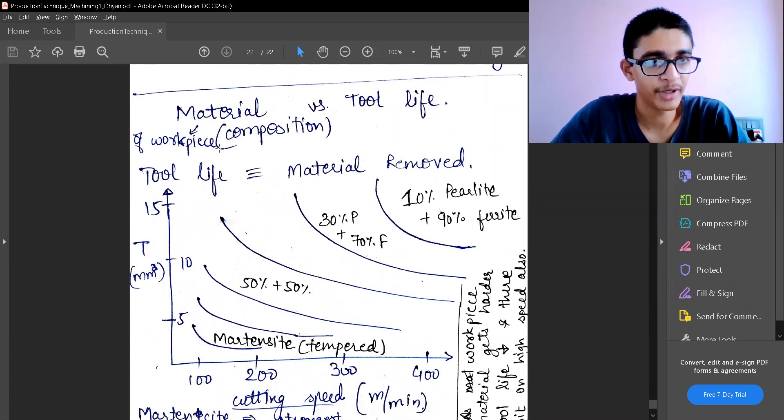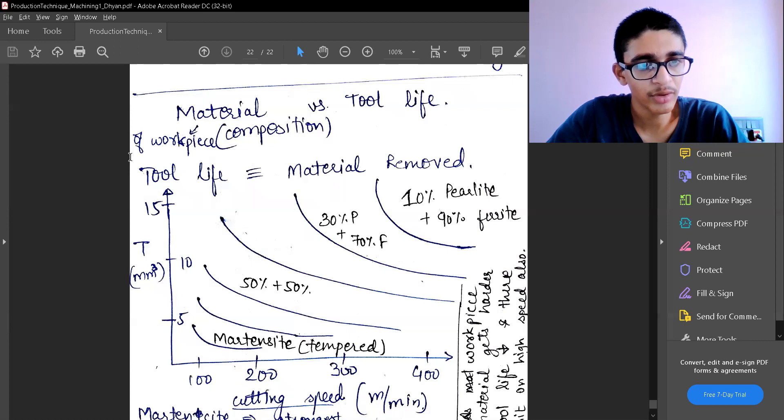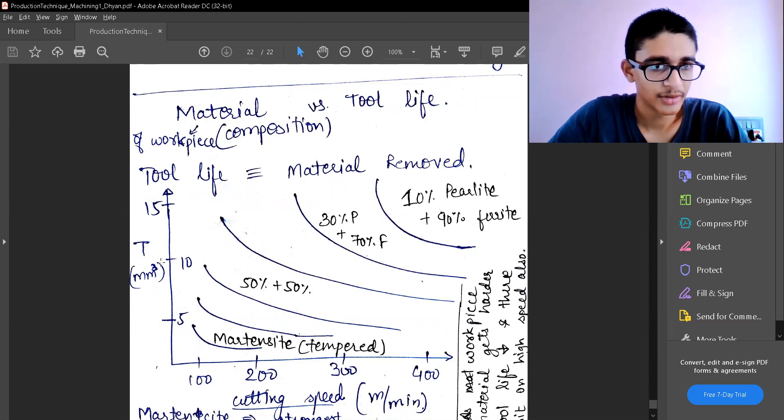Now we'll look at how the tool life is changing with respect to the material of workpiece, so how hard the workpiece material is and how long my tool is going to last. Now my tool life I'm going to equate it to the material removed, so I'm going to take the y-axis which is the tool life as the material removed in cubic millimeters, and the total material removed it can do, and the function is the cutting speed.